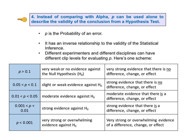Rather than comparing P to alpha to come to a conclusion, we can use the P value alone. We can specify several ranges of P values, each describing how strong the evidence against the null hypothesis is. Remember, P is the probability of an alpha error — a false positive. It is the probability of concluding that there is a difference, change, or effect when in reality there is not. This is one example of a scheme for classifying the strength of the data's conclusion about the null hypothesis.